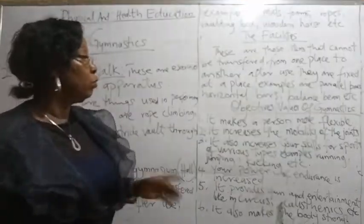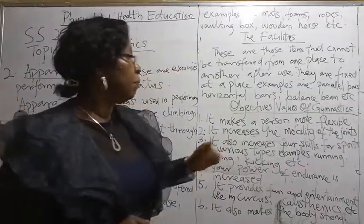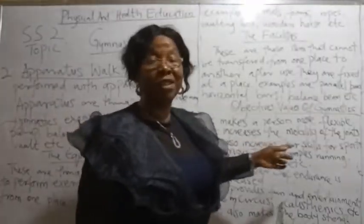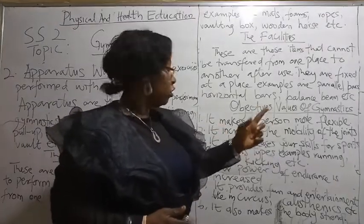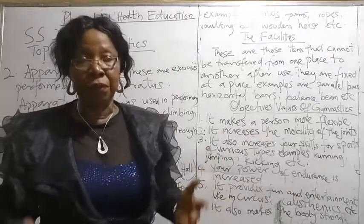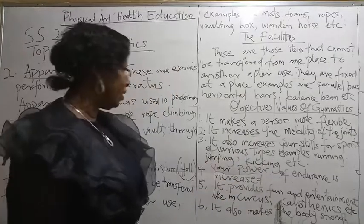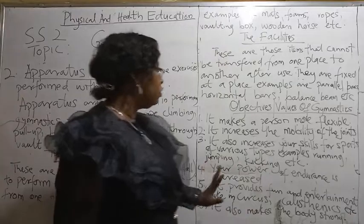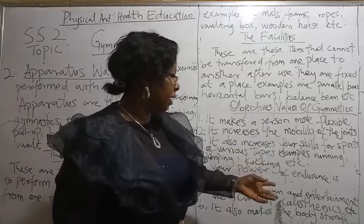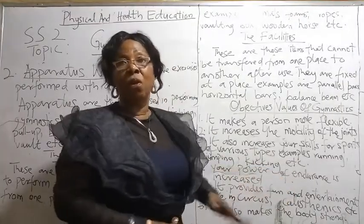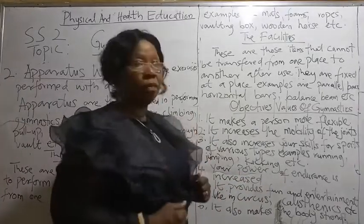Now let's go to the objectives and values of gymnastics. 1. It makes a person more flexible. 2. It increases the mobility of the joints. 3. It also increases your skills for sports of various types — examples: running, jumping, kicking. 4. Your power of endurance is increased. 5. It improves performance and entertainment, like in circus and calisthenics — people will gather and watch and feel happy. 6. It also makes the body strong.